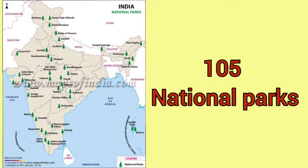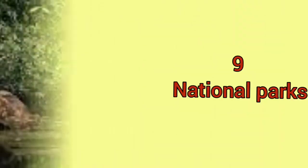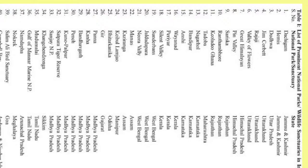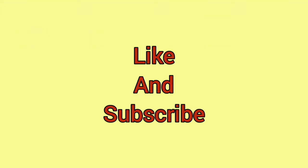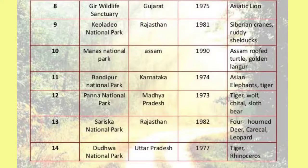In India, there are 105 National Parks. The biggest one is Hemis National Park, established in Jammu and Kashmir in 1981. Jim Corbett National Park was the first National Park. The maximum number of National Parks are found in Madhya Pradesh. There are 105 National Parks in total, and at the end of the video I will give you a list of all these. I hope you have understood it well. Please like and subscribe the video and wait for the next video on Biosphere Reserve. Please go through the given list. Thank you.